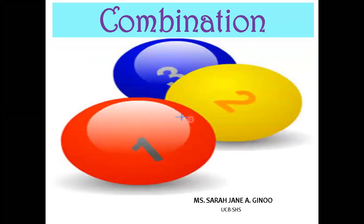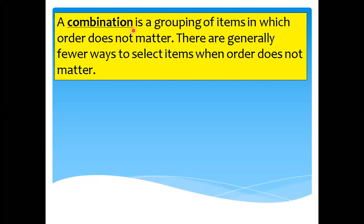And if you might be wondering, students, what is a combination? As we define it, a combination is a grouping of items in which order does not matter. There are generally fewer ways to select items when order does not matter. The main thing to remember about combination is that the order is insignificant, or the order does not matter.